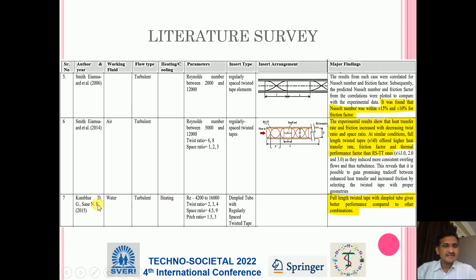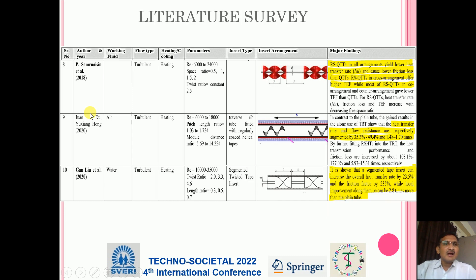Another work by Kumbar DG and Sani NK using working fluid as water. The fluid type is turbulent, used for heating application. Reynolds number range is 4200 to 16000, and the insert arrangement used is a dimpled tube with regularly spaced twisted tape. The major finding is that full length twisted tape with dimpled tube gives better performance compared to other combinations. Another work in 2008 with turbulent flow heating application, Reynolds range 6000 to 24000, found that regularly spaced twisted tape in all arrangements yields lower heat transfer rate and causes lower friction loss compared to the normal case.